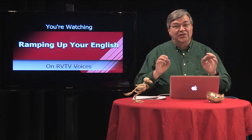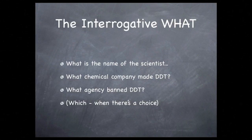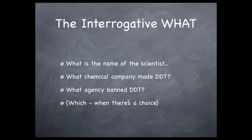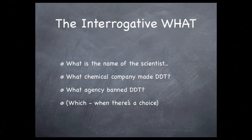It's important to note that there are other interrogatives that could be used to ask the same question. For example, you could use the interrogative what to ask the same questions: what is the name of the scientist that discovered that DDT was damaging the eggs of certain birds? What chemical company made DDT? You could also use which — which is not one of these six, but it always implies a choice between more than one. Like several agencies in the government, you could say which agency banned DDT, or you could stay with the interrogative what: what agency banned DDT? It's all kind of the same information.